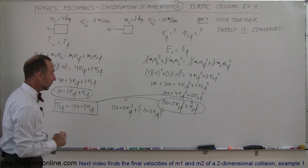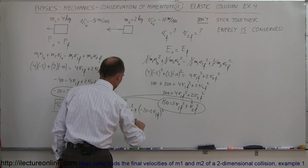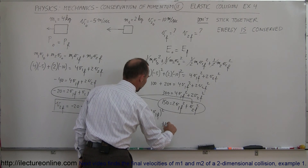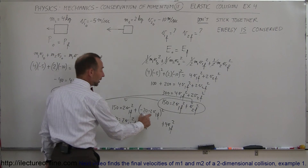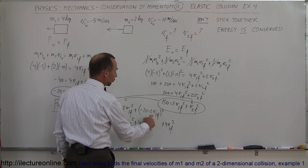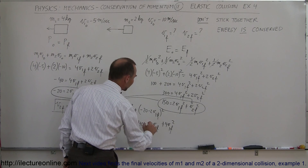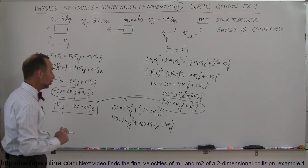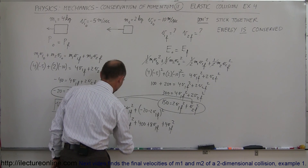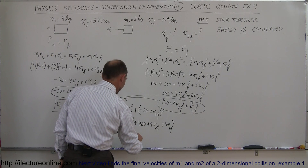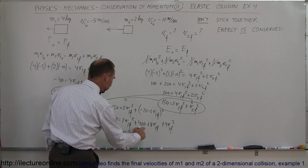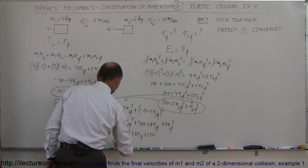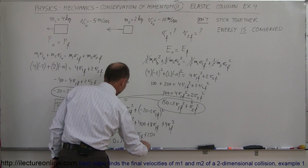Now we just have to work that out algebraically. So 150 equals 2 v1 final squared plus — expanding the square — the first term squared gives 400, the last term squared gives plus 4 v1 final squared, and the middle term, twice the product of the two, gives plus 80 v1 final, because we're multiplying a negative times a negative. Moving everything to one side and consolidating: 0 equals 6 v1 final squared plus 80 v1 final plus 250. Dividing everything by 2 gives 0 equals 3 v1 final squared plus 40 v1 final plus 125.